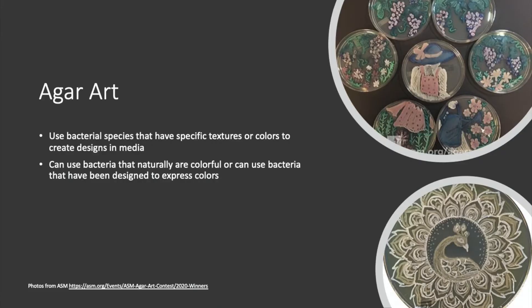In microbiology, there are a lot of microbiologists who, in their free time, like to make agar art. They take plates and streak bacteria onto the plates to form really amazing designs — some of them are really, really beautiful. You can use bacterial cultures that have specific colors or even textures to make different designs, and there are also ways to modify the genomes of bacteria to make them fluoresce a specific color. So you can use either naturally occurring ones, like the Photobacterium phosphoreum that we used, or artificially colored bacteria.